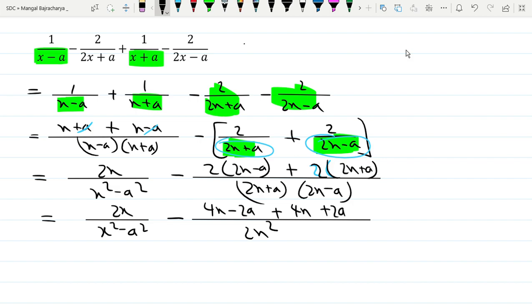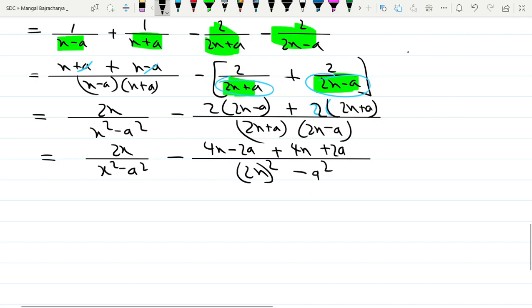This will be 2x in brackets minus a square. Plus 2a or minus 2a equals 2x divided by x square minus a square, minus 4x. 4x divided by 8x, so 8x divided by 4x square minus a square.